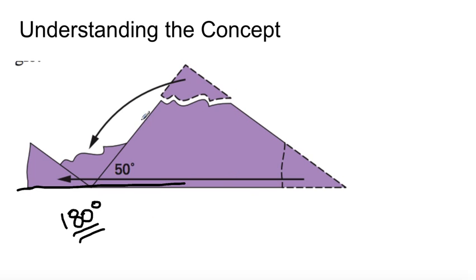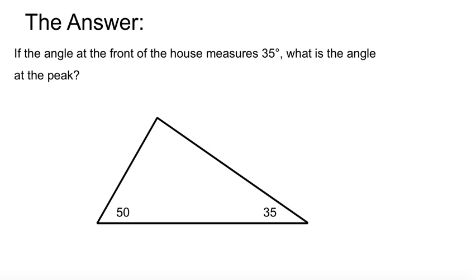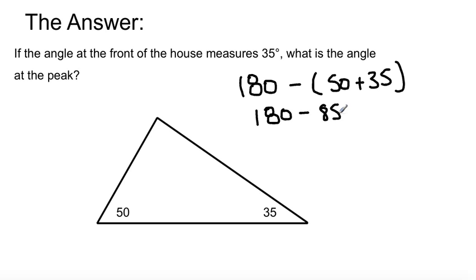So now that we know that, let's try to solve this problem. Now we're going to be given another angle, so we're going to know what the remaining angle is. So the answer, if the peak at the front of the house measures 35 degrees, we're already given 50. So we have 180 is the total minus 50 plus 35, which will give you 180 minus 85 equals 95.